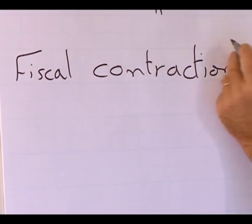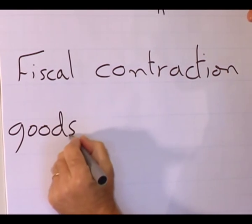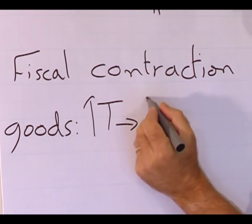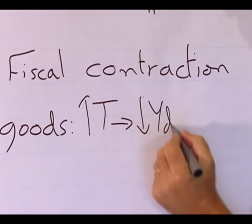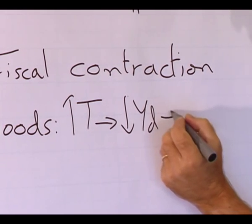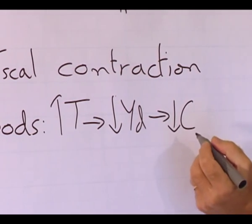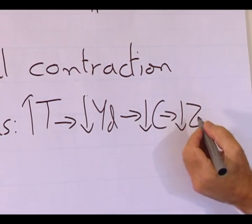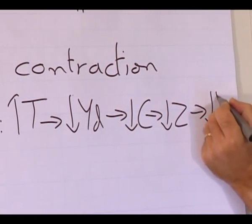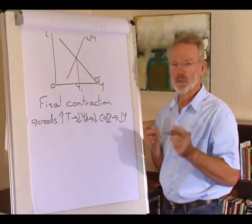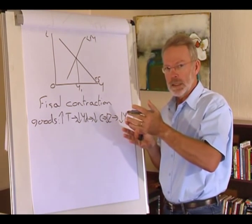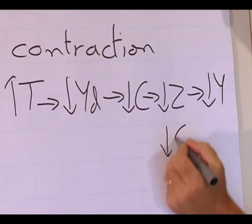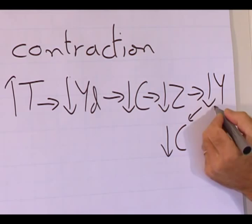Fiscal policy forms part of the goods market. An increase in taxes leads to a decrease in the demand for goods and services and a decrease in the output level. Since consumption spending and investment spending are functions of the level of output, consumption spending will decrease and investment spending will decrease as the output level falls.